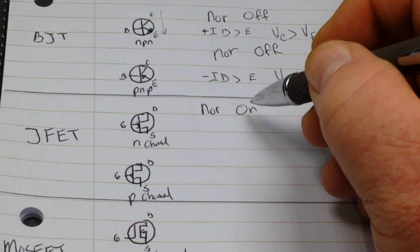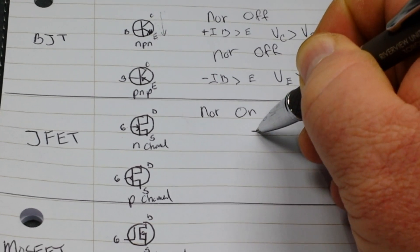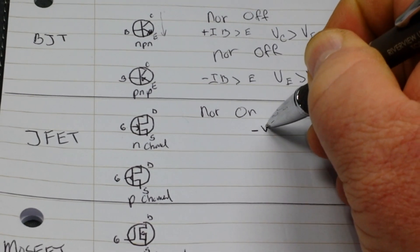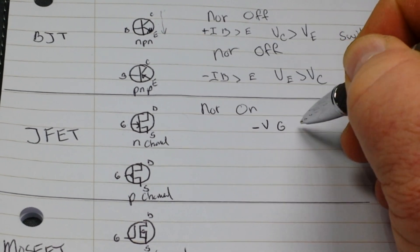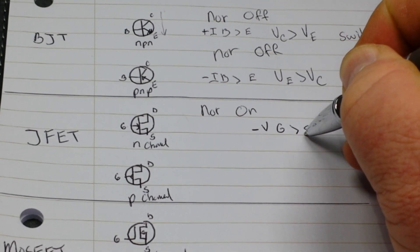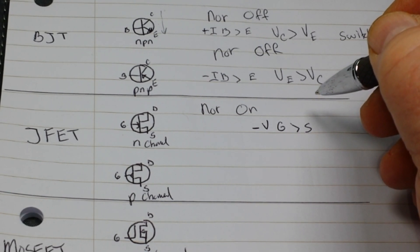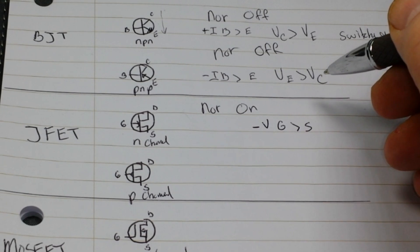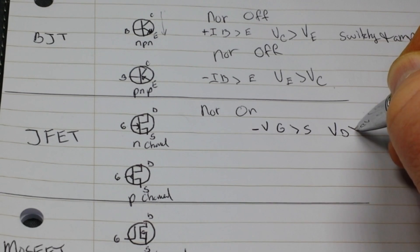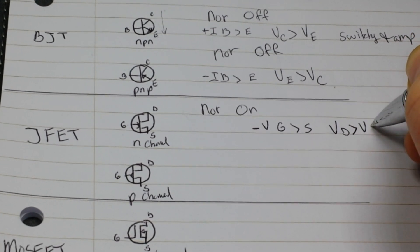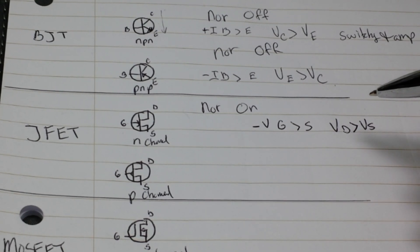And a small negative voltage at its gate relative to the source will stop the drain source current. And it operates as VD is greater than VS. And again, used in switching and amplifying applications.